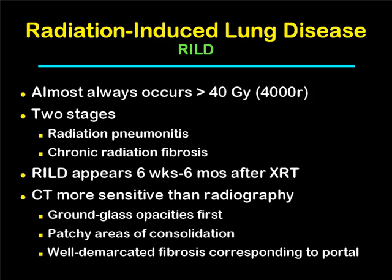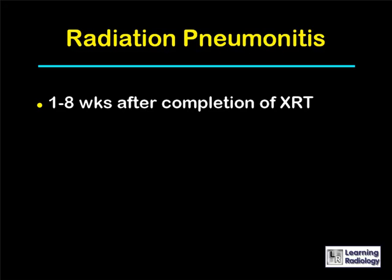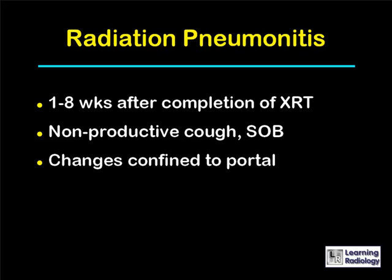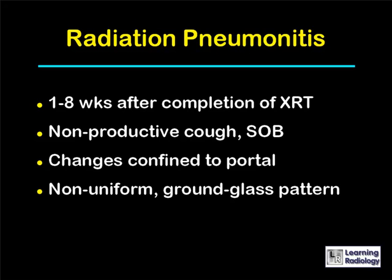CT is a more sensitive means of demonstrating radiation changes in the lung than conventional radiographs. On CT, we can see ground glass opacities at first, then patchy areas of consolidation, and finally well-demarcated areas of fibrosis that correspond to the radiation portal. Radiation pneumonitis can be seen as early as one week, but usually about six weeks after completion of treatment. Patients complain of a non-productive cough and shortness of breath, and changes are confined to the radiation portal.